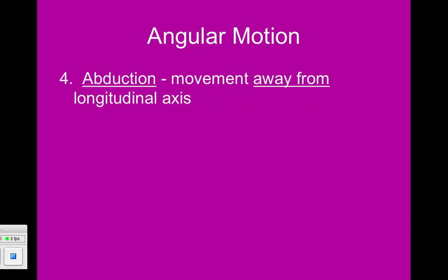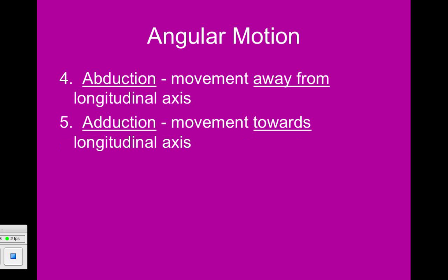The fourth type is abduction, which is movement away from the longitudinal axis. A helpful way to remember it: when something gets abducted, it gets taken away. So if you abduct a joint, you're moving it away from its longitudinal axis. The opposite is adduction — you're adding it back, moving it towards the longitudinal axis. The longitudinal axis can run down the center of the body or down the center of the arms or legs. For example, fingers can abduct and adduct by spreading and then compressing them.